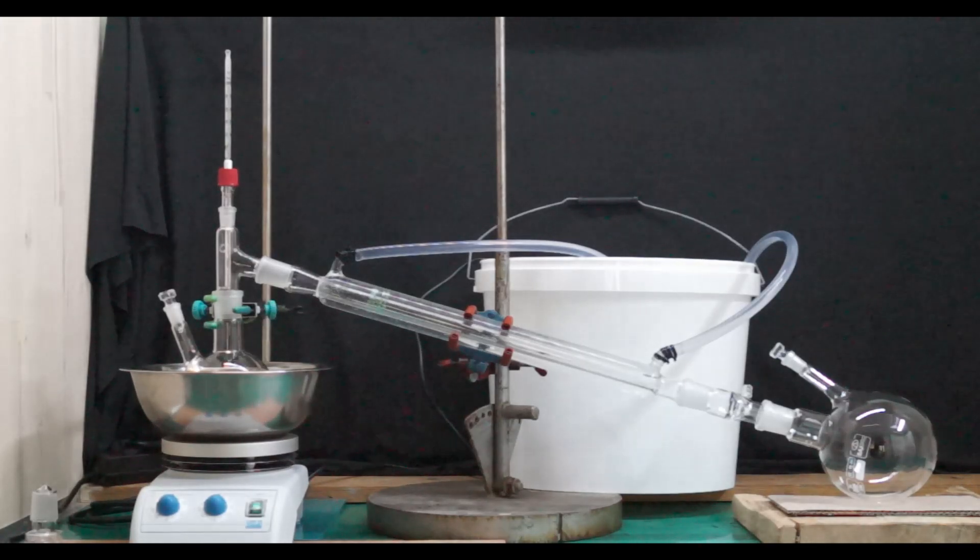The 500 milliliter two-necked flask is put on an oil bath on top of a magnetic stirrer and heater. The side neck is not needed and is closed with a glass stopper. On top of the flask is a three-way adapter with a thermometer.